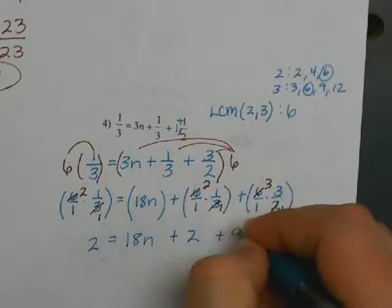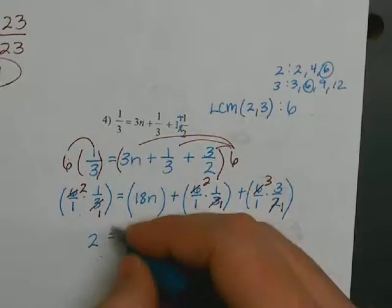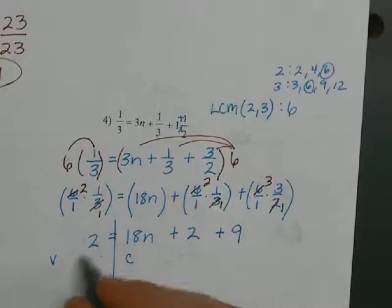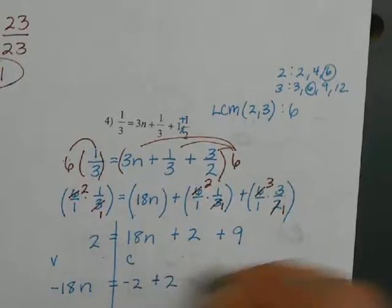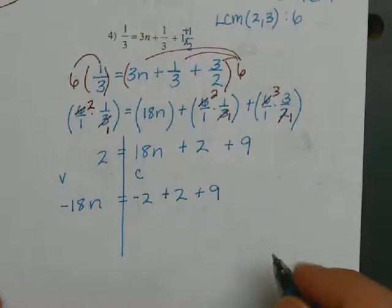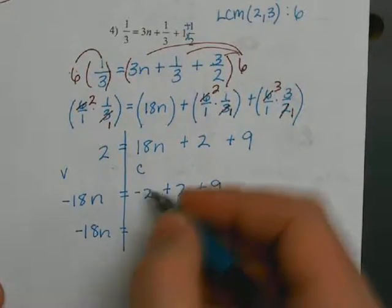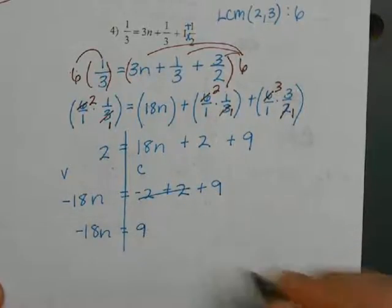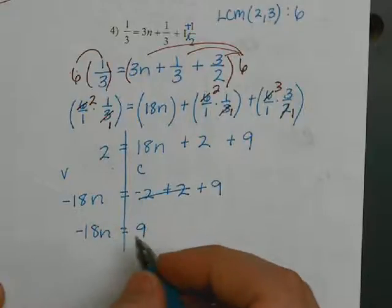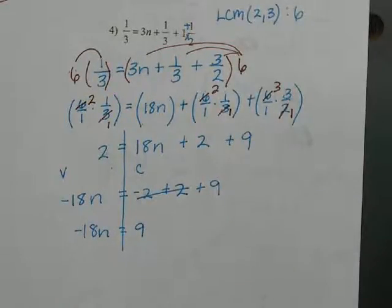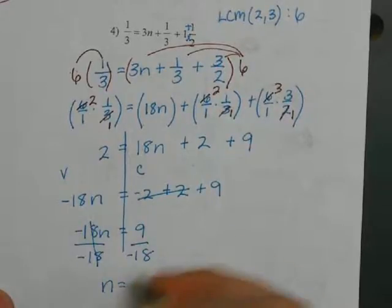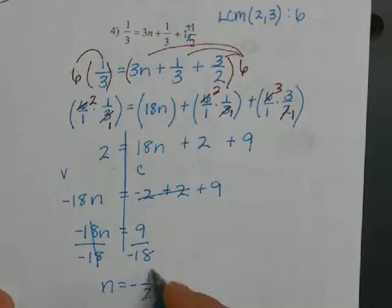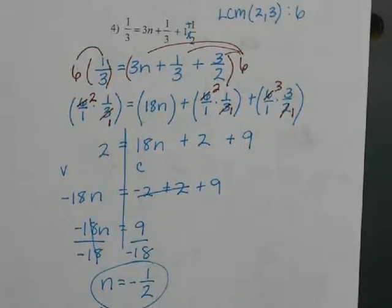Now I separate variables and constants: variables on the left, constants on the right. Two is a constant — move it over. 18n is a variable term — move it over. Combining: negative 18n on one side, negative two plus two is zero, leaving nine. Dividing both sides by negative 18, I get n equals negative one-half.